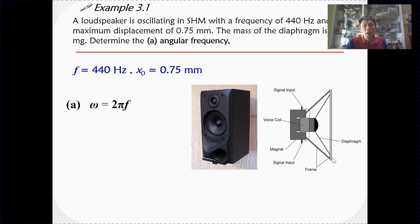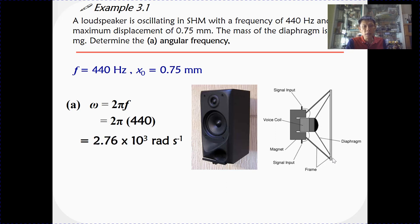From section 1, terms and definitions, we learned that angular frequency is defined as the product of 2π times the frequency. So multiplying 2π by 440 Hz, we get approximately 2760 radians per second.